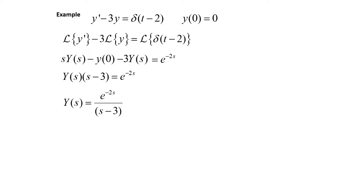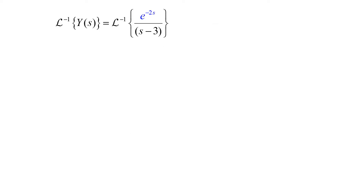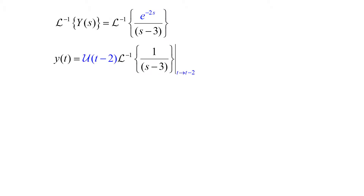Once we have solved for Y(s), we'll take the inverse Laplace transform of both sides. So the inverse Laplace of Y(s) equals the inverse Laplace of e to the negative 2s over s minus 3. We see that exponential in s — e to the negative 2s — that should be a clue that we're going to need to use our second translation theorem, or translation on the t-axis. We're going to get little y(t), and e to the negative 2s is going to give us the Heaviside function at t minus 2.